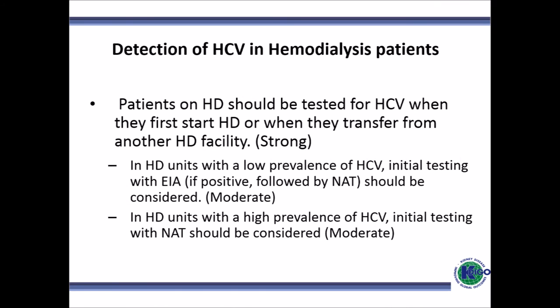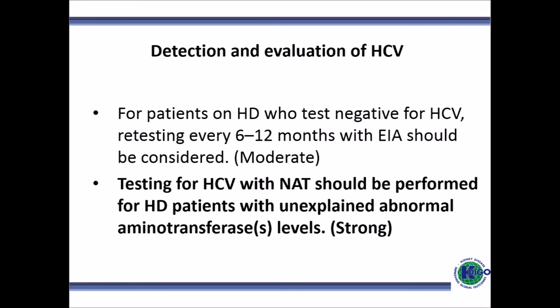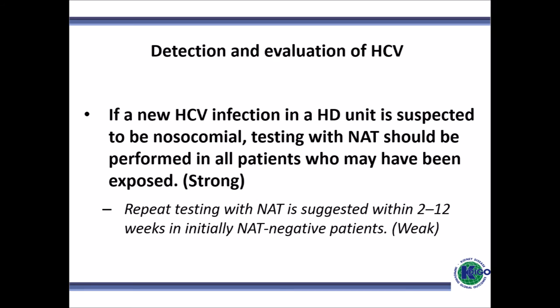Patients who come for hemodialysis should be tested for hepatitis C virus when they initiate dialysis or transfer from another facility. In units with a low prevalence of HCV, initial testing could be by ELISA, followed by nucleic acid testing if positive. In units with a high prevalence of HCV, initial testing could be by nucleic acid testing. These are KDOQI guidelines. Patients who test negative could be retested 6 to 12 monthly. Those with an abnormal aminotransferase level rise should be tested with nucleic acid testing. If a new HCV infection is suspected to be nosocomial, nucleic acid testing should be performed for all potentially exposed patients, with retesting of negative patients 12 weeks later to account for the window period.